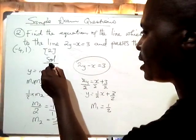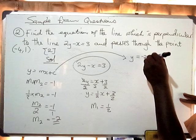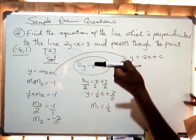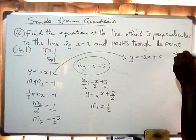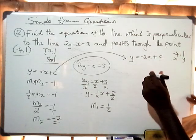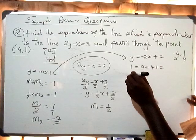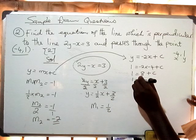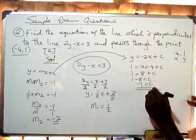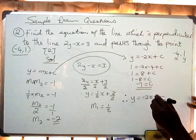Now we find the y-intercept, the value of c. Our equation so far is y equals negative 2x plus c. The line passes through the point negative 4 comma 1, so we substitute: 1 equals negative 2 times negative 4 plus c. That gives 1 equals 8 plus c, so c equals 1 minus 8, which is negative 7.